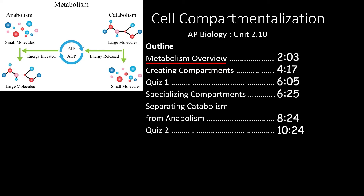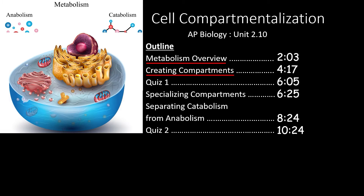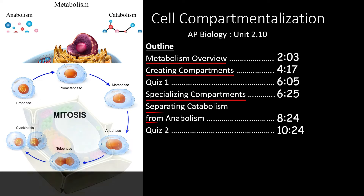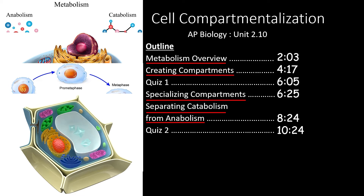Then we will see how cells create specialized compartments and what they do with these structures. After the first quiz, we will take a look at how cells create specialized compartments by packing them with the appropriate enzymes and metabolites. Finally, we will look at the many different catabolic and anabolic processes that are separated by compartmentalization.